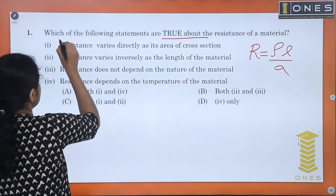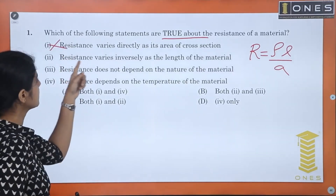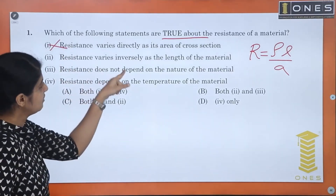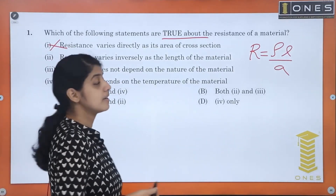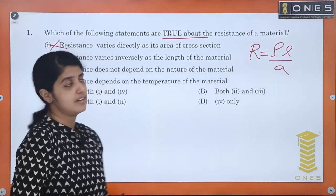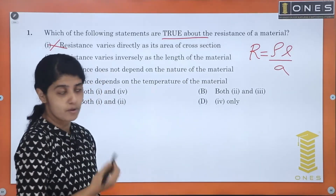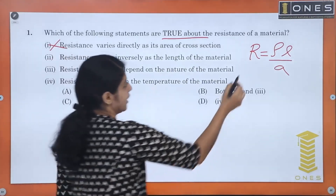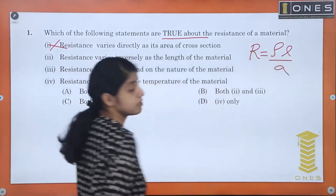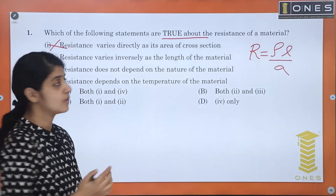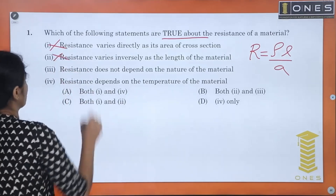The next statement: resistance varies inversely as the length of material. But from R = ρL/A, resistance is directly proportional to the length of material, not inversely. So that statement is also wrong.